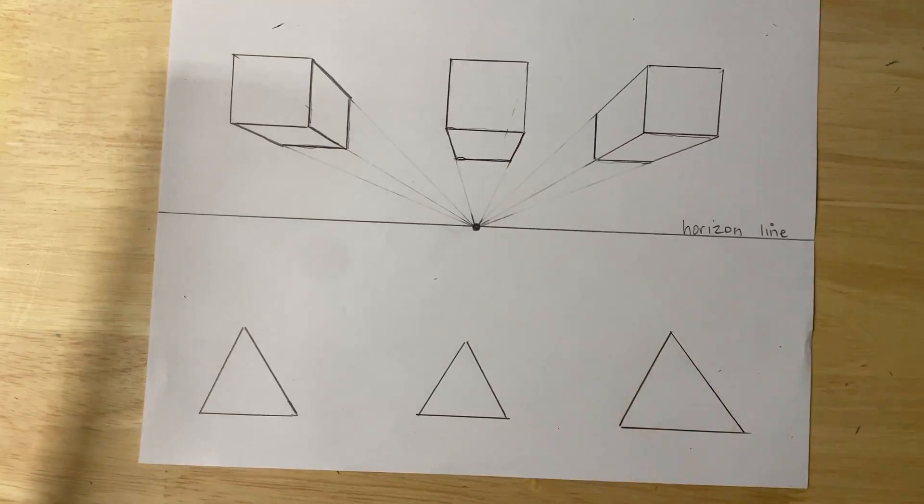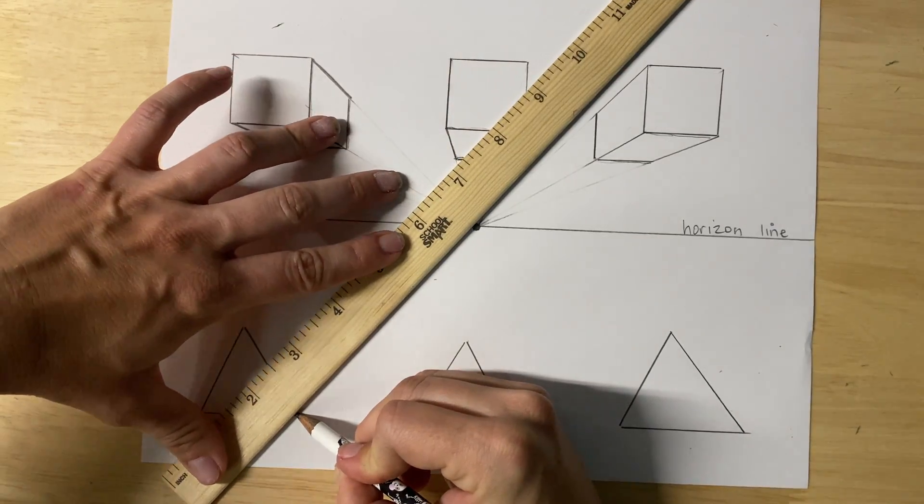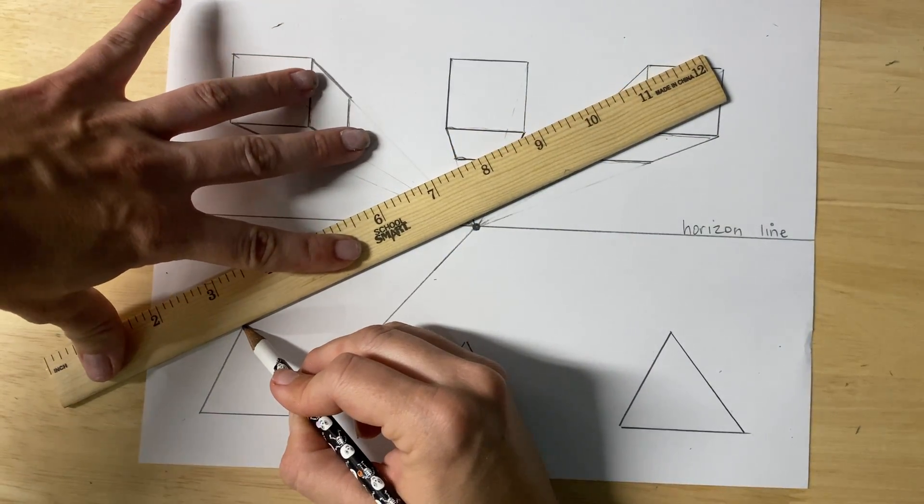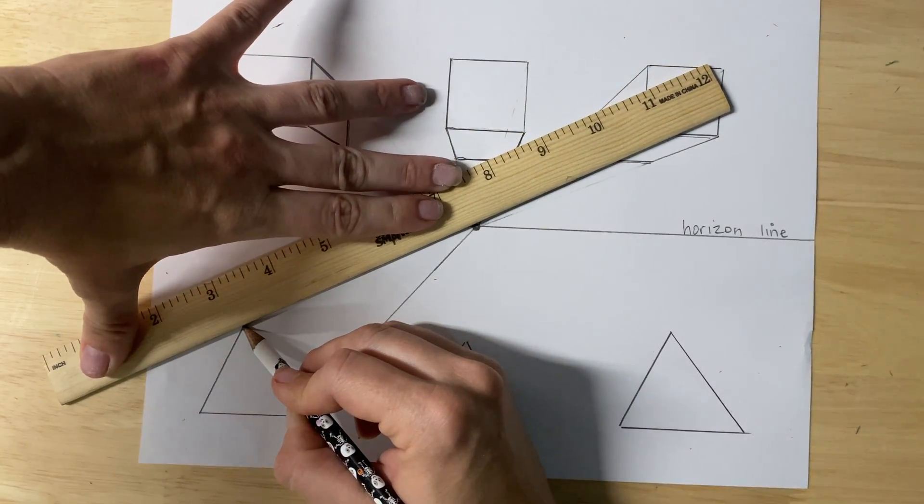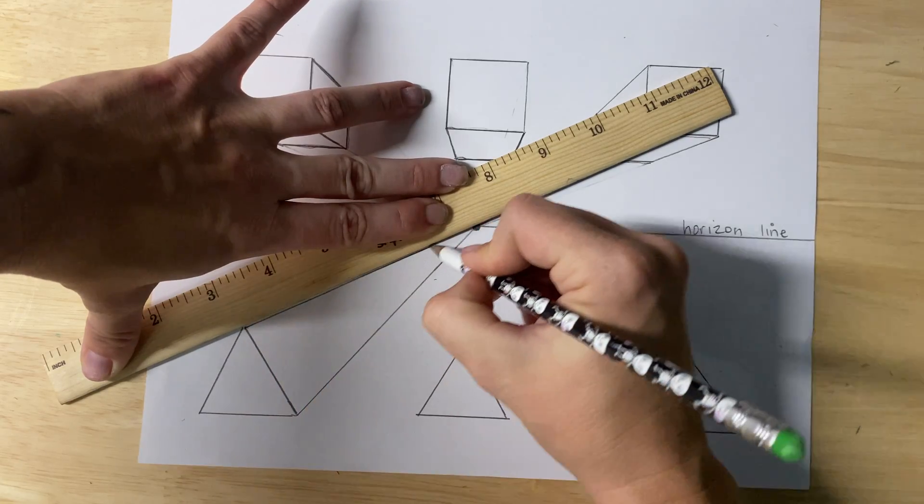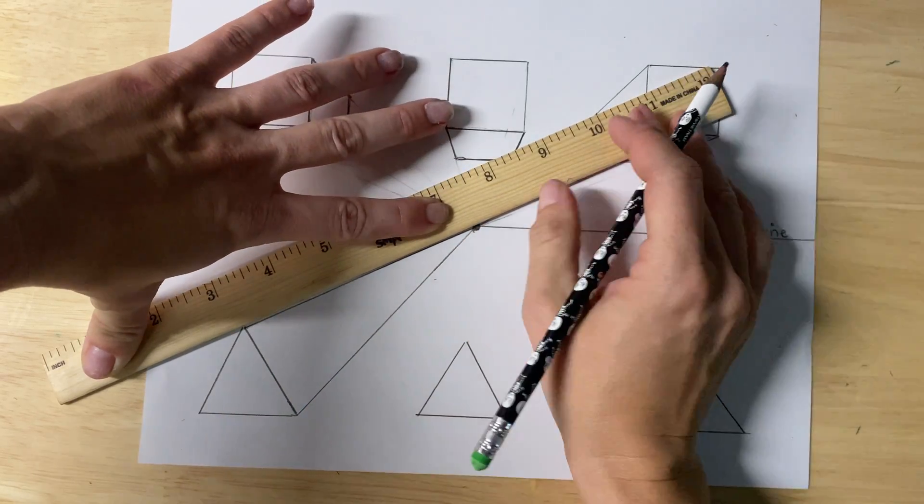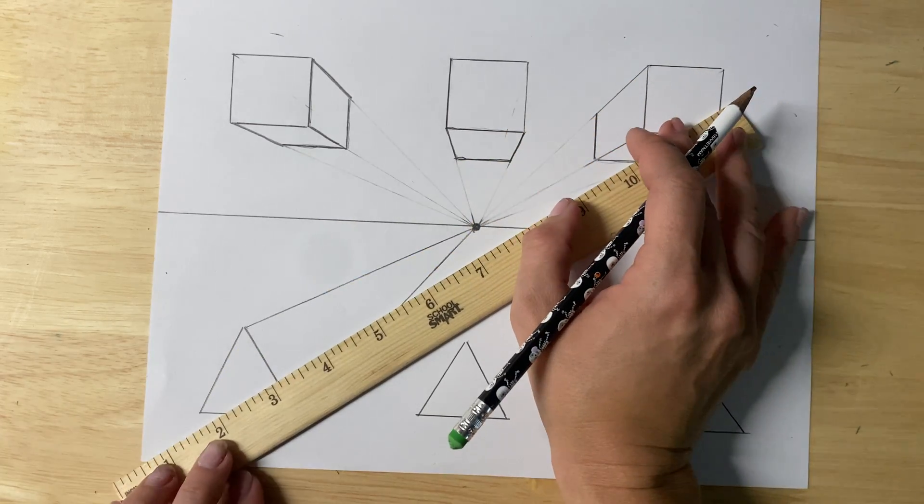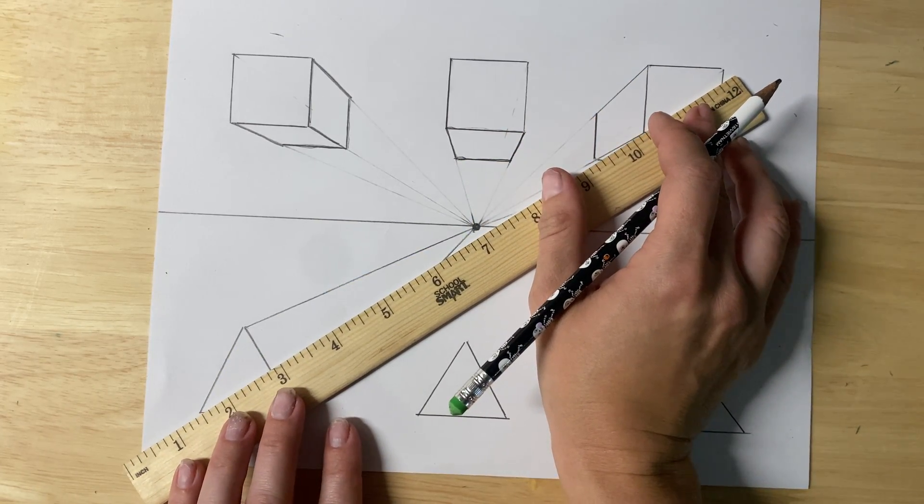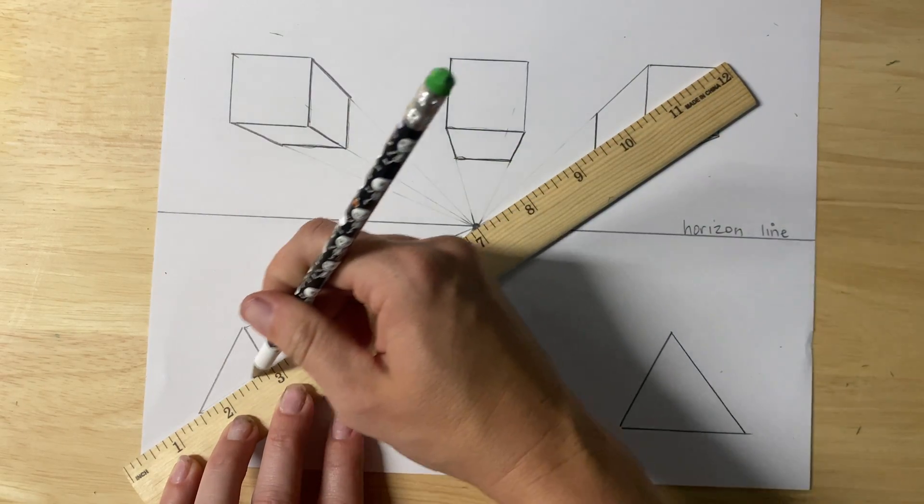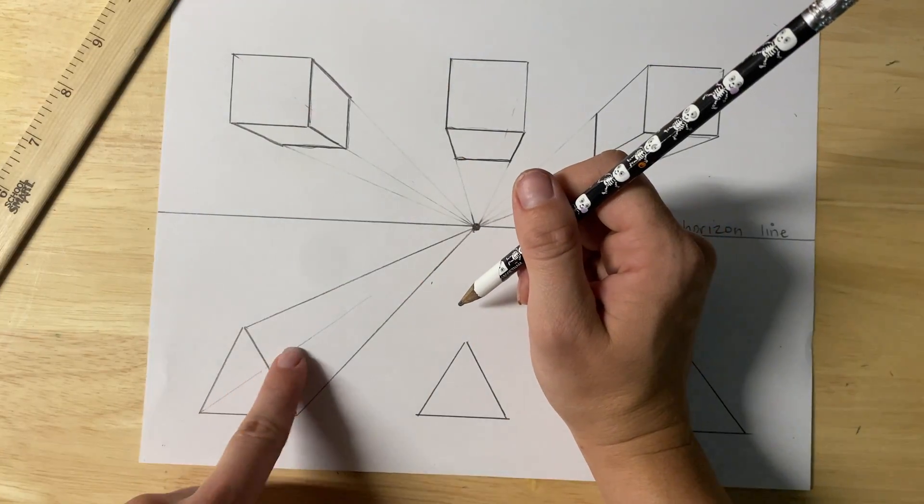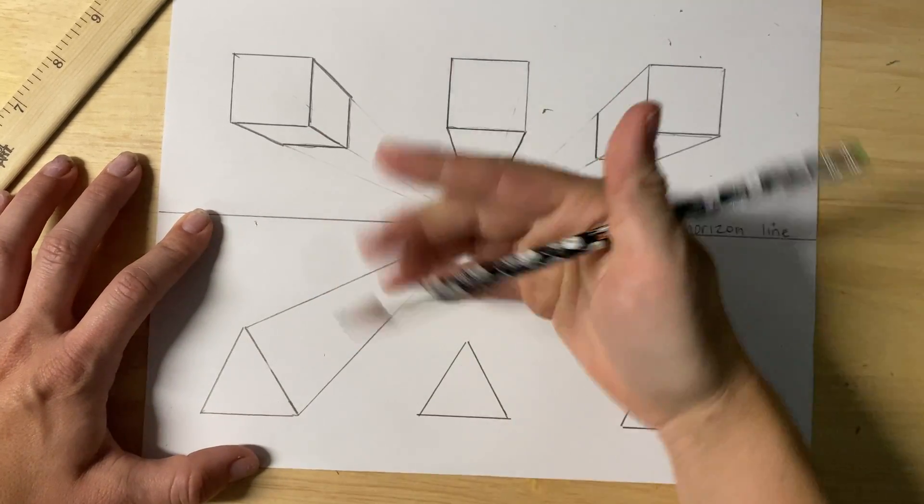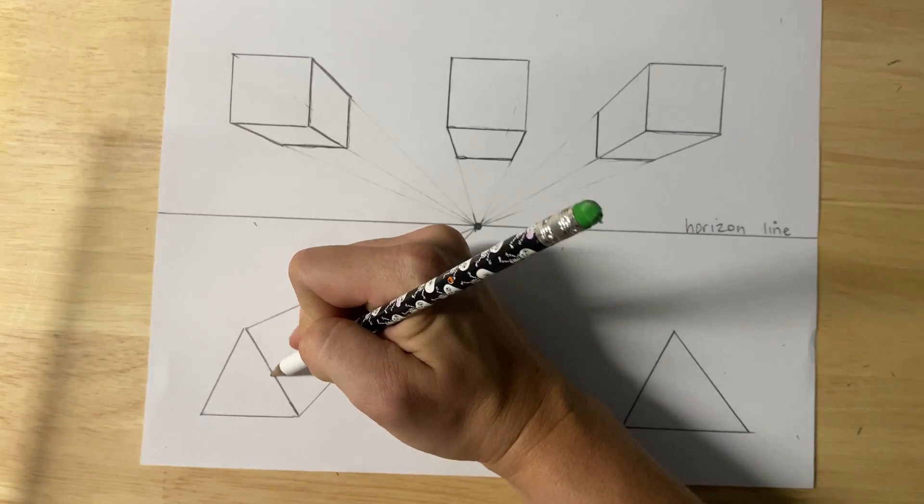Onto triangles. Start with this first one on the left. Same thing as the squares. Start at your corners. Line it up to your vanishing point. It has to be precise. Make sure you're going to that vanishing point. You can't just be kind of near it. It has to be exact. You can try this third corner. But I can see that it's going to go through my shape. So I don't want something that you can see through. Not for this activity anyway. So don't worry about that one.